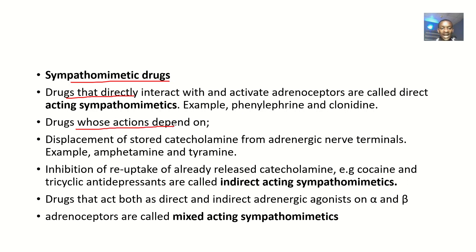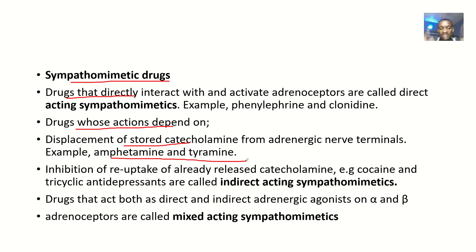Drugs whose action depends on the displacement of stored catecholamines from adrenergic nerve terminals — examples include amphetamine and tyramine. They basically displace catecholamines so that catecholamines are released in excess. Another mode of action is inhibition of the reuptake of already released catecholamines — drugs like cocaine and tricyclic antidepressants.